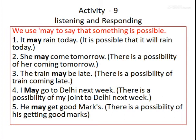I may go to Delhi next week. There is a possibility of going to Delhi next week — it is possible, not certain. Because there is a possibility, we use 'may' — I may go to Delhi next week.